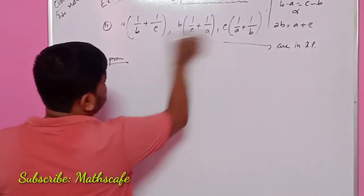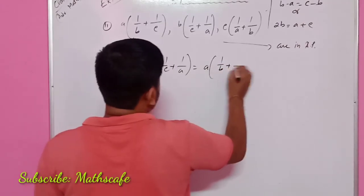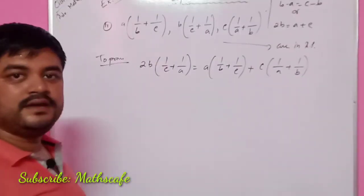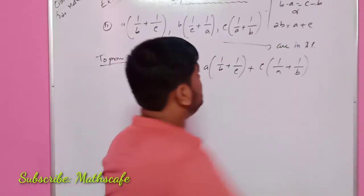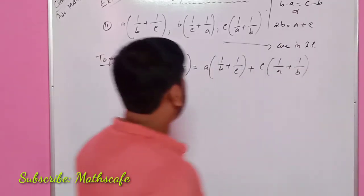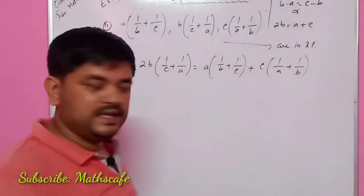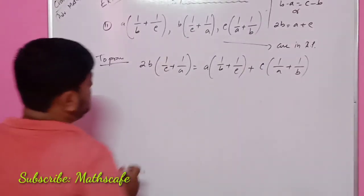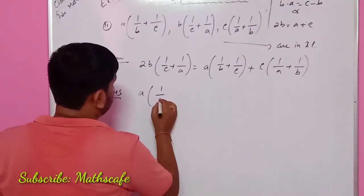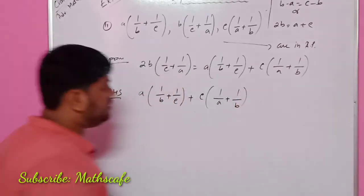So I will write question number 2. 2 of b(1 plus c) plus (1 plus a) equals a(1 by b plus 1 by c) plus c(1 by a plus 1 by b). Since A, B, C are in AP, I will write: a(1 by b plus 1 by c) plus c(1 by a plus 1 by b).